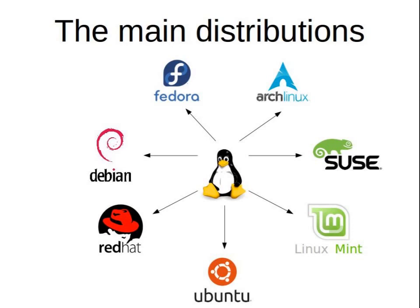The first one is Debian. It can run both on desktop and servers and it is known to be very stable and community driven. The next one is Red Hat. It is a very important server distribution and optimized for that use.